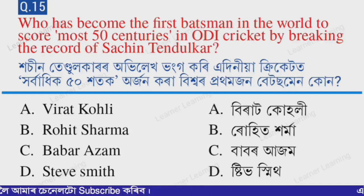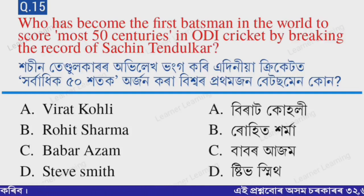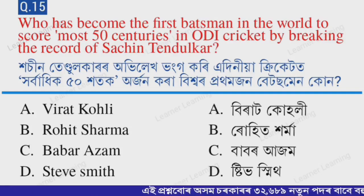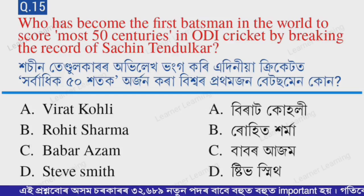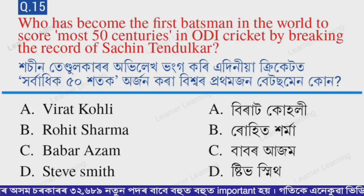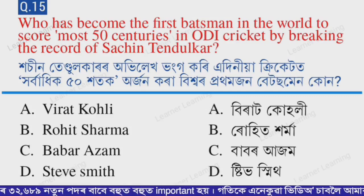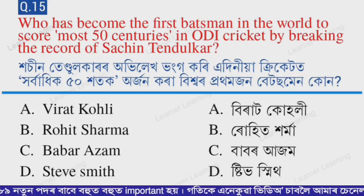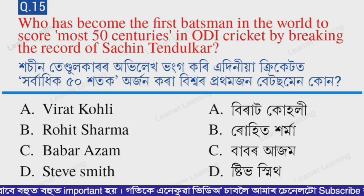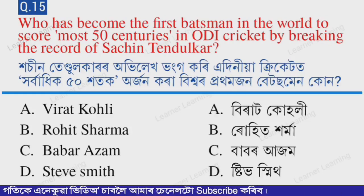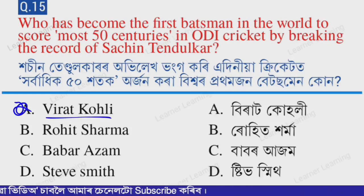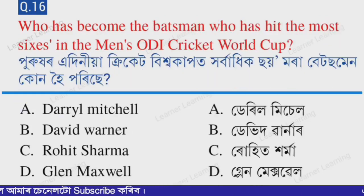Next question: who has become the first batsman in the world to score the most 50-plus centuries in ODI cricket, breaking the record of Sachin Tendulkar? The correct option is option A — Virat Kohli.